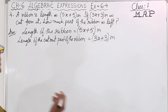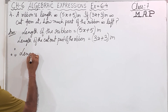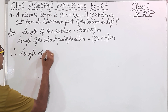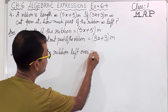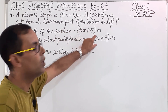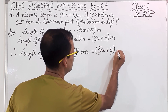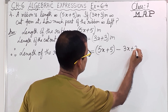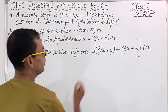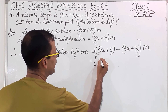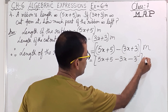These statements you can prepare by yourself. So therefore, how much part of the ribbon is left? Length of the ribbon left over equals: from 5x plus 5, you will subtract 3x plus 3. You can give a bracket like this way, and then you can write meter. Clear?